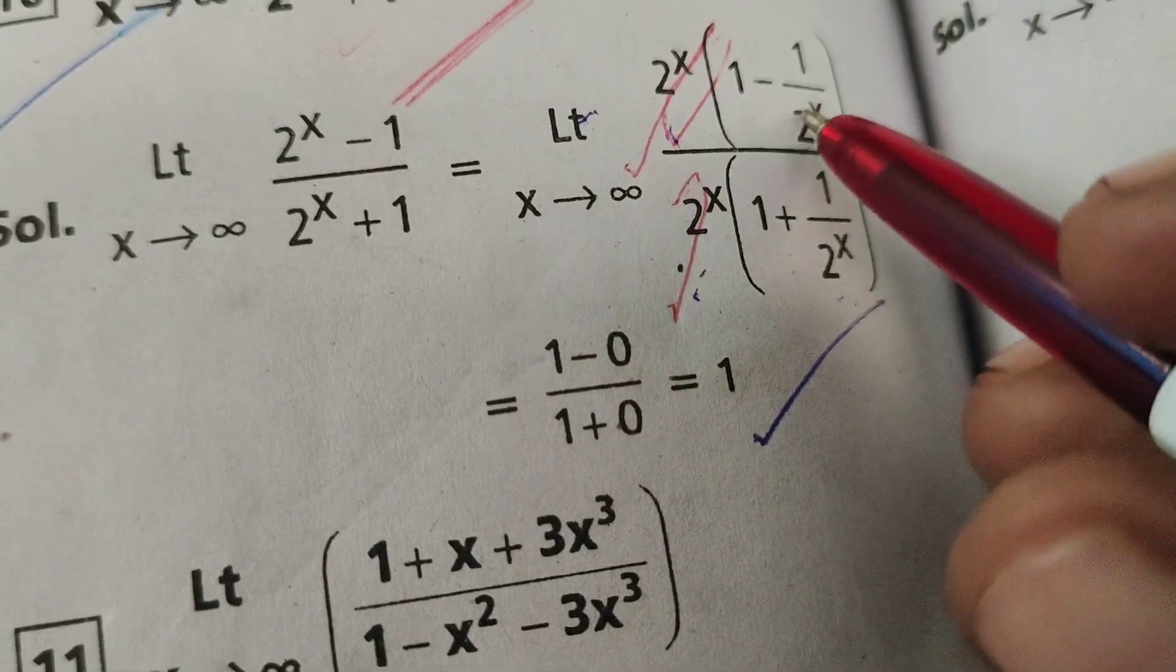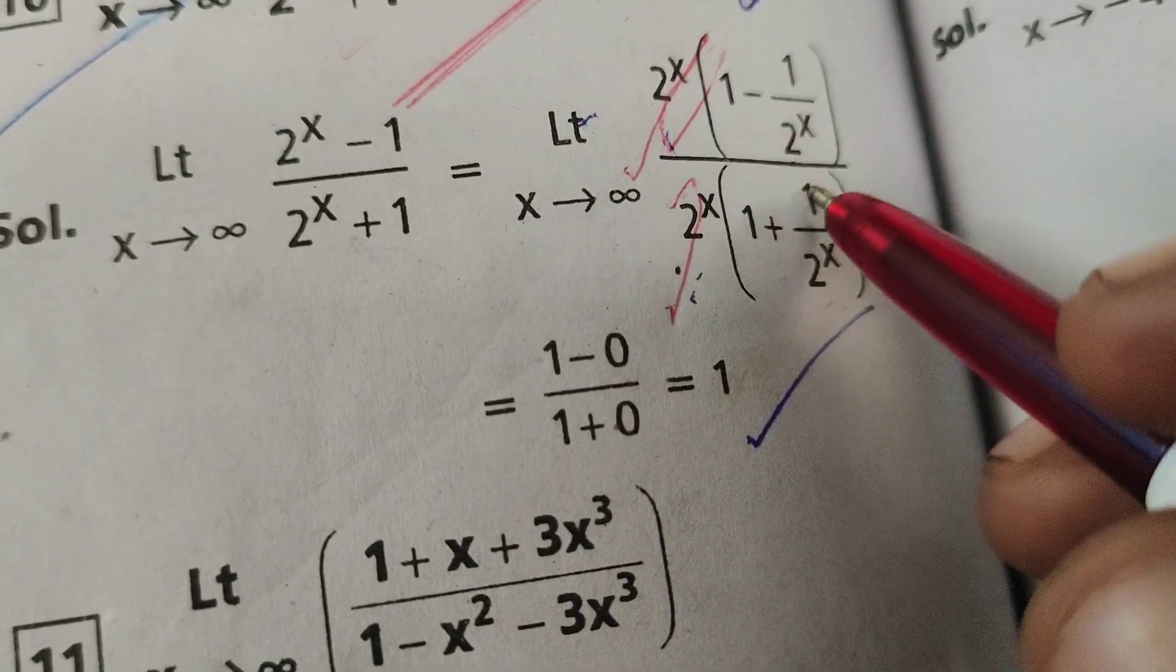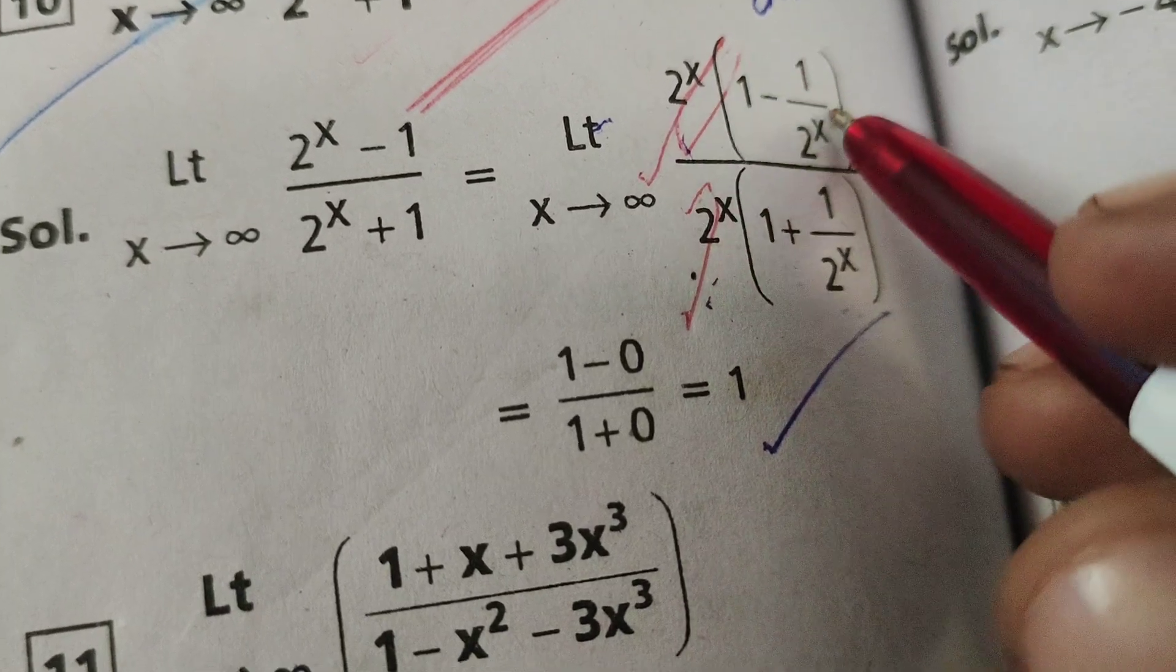Here, in place of x substitute infinity, 1 by 2 power infinity, that is 0, 1 minus 0.